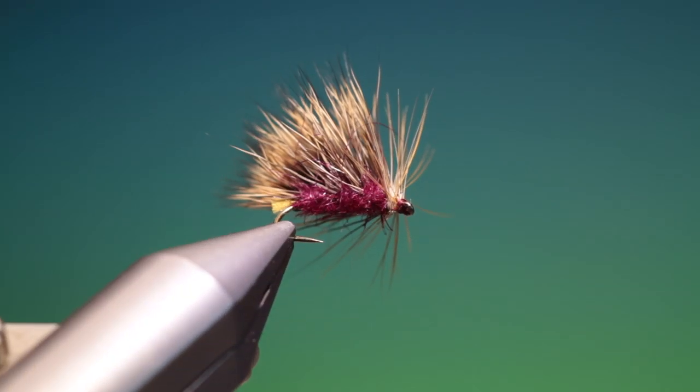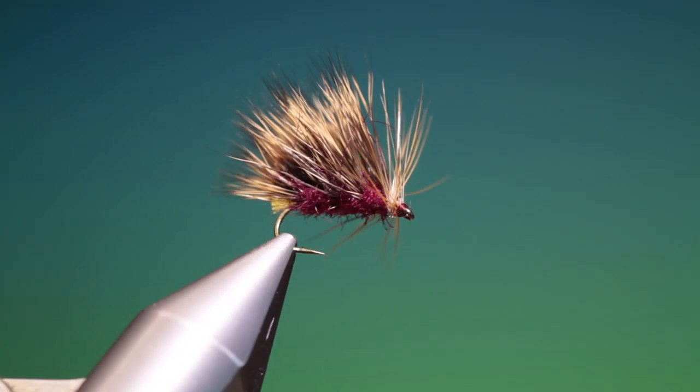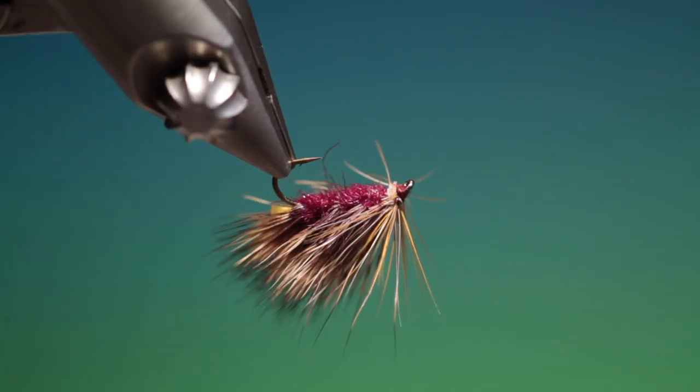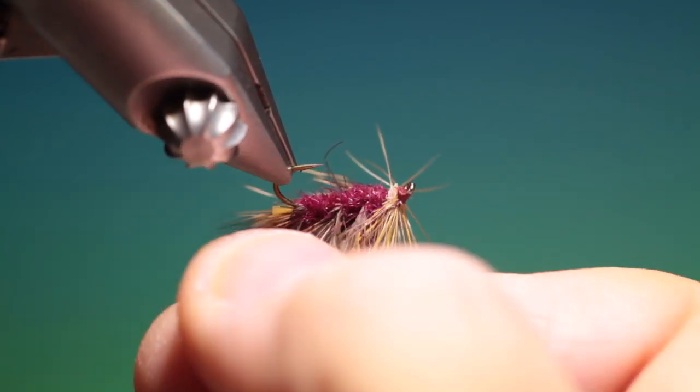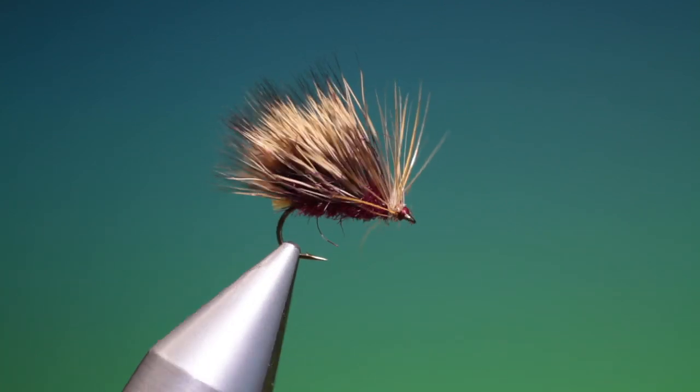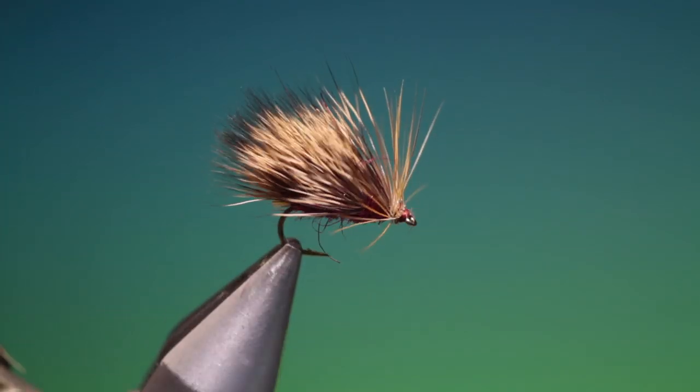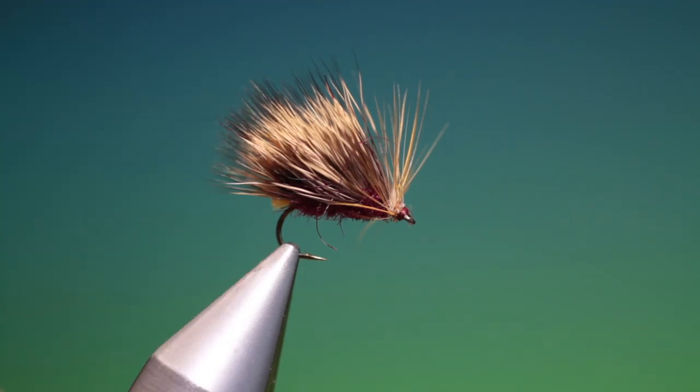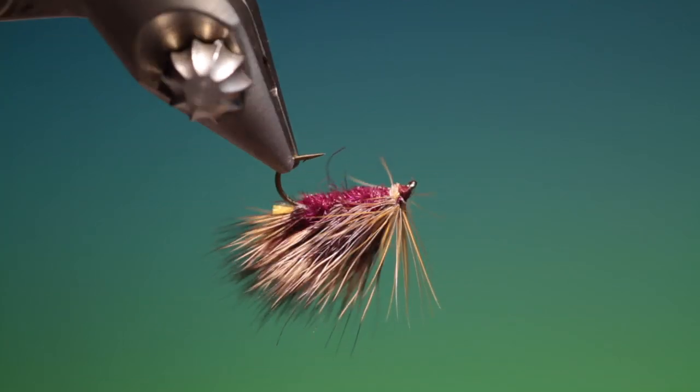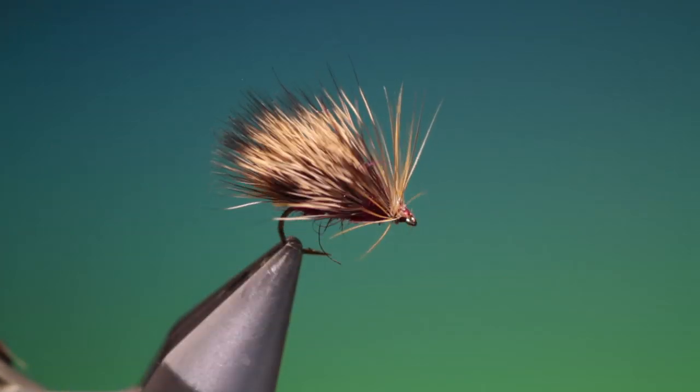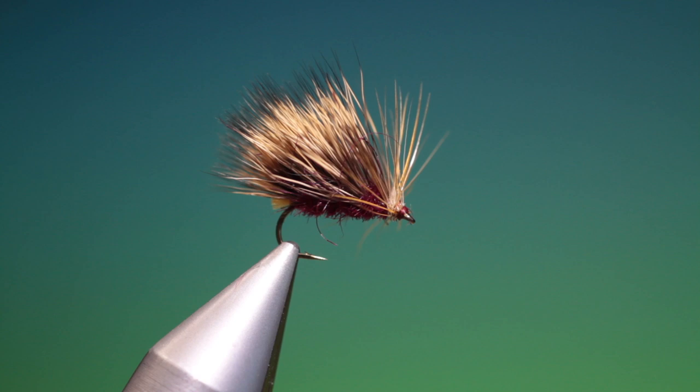Puff up the wing and you can see the hotspot hopefully there on the underside. And that's the finished Hotspot Sedgehog. It's a fabulous pattern and will work all year round, literally. So please give it a go. If you enjoy the videos please like, share and subscribe and thanks for watching.